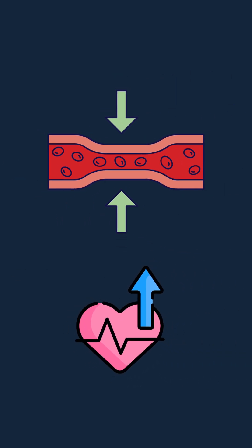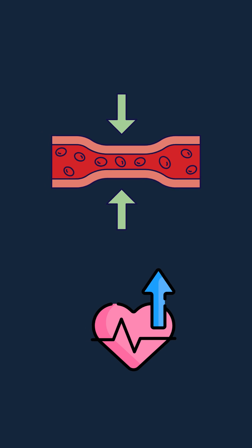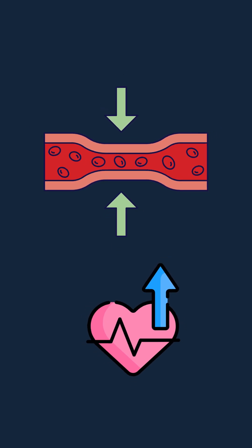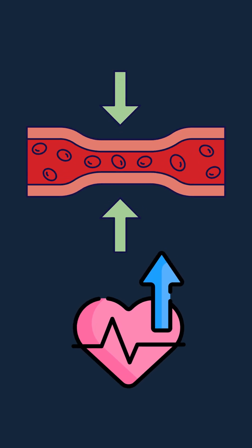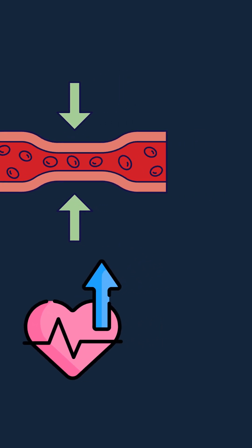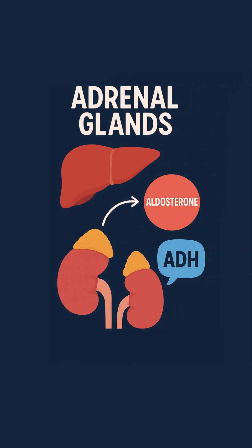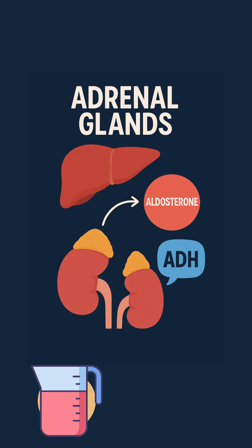Angiotensin 2 causes blood vessels to constrict, which increases vascular resistance and elevates blood pressure. It also stimulates the adrenal gland to release aldosterone, a hormone that signals the kidneys to retain sodium and water, further increasing blood volume and pressure.